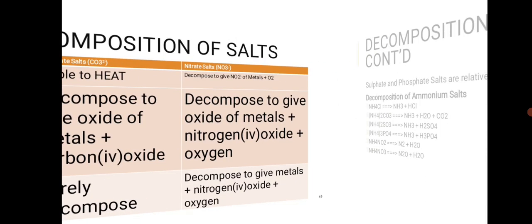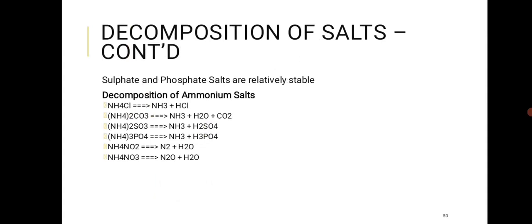For ammonium sulfate (NH4)2SO4, it gives H2SO4 upon decomposition. The same logic applies to phosphates. For ammonium nitrate NH4NO3: it decomposes to give N2O + H2O, because the extra oxygen in the nitrate ion shows up as N2O — that's the key distinction there.